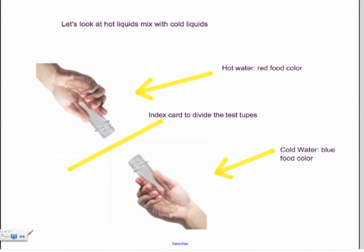We will have done this in class. So hopefully if you missed it, you've come to tutoring so that you can do this. We're going to take two little test tubes. One with warm water with some red food coloring and some with cold water and blue food coloring. An index card and we're going to pull them apart and see what happens.